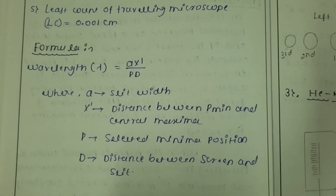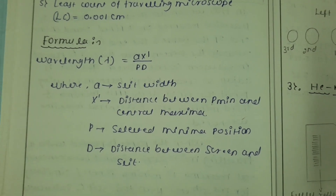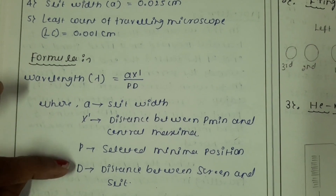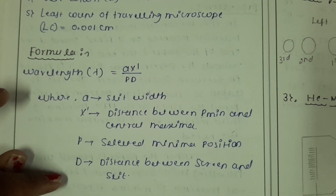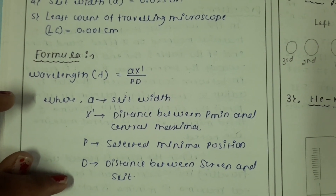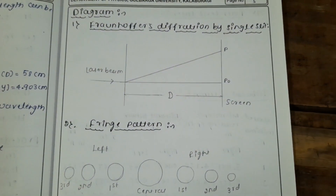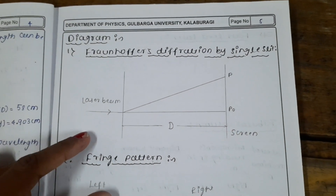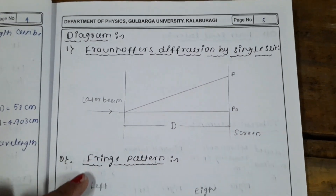The formula to calculate the wavelength is: λ = (a × x') / (p × d), where x' is the distance between the p-th minimum and central maxima, a is the slit width, p is the selected minima position, and d is the distance between the screen and slit.